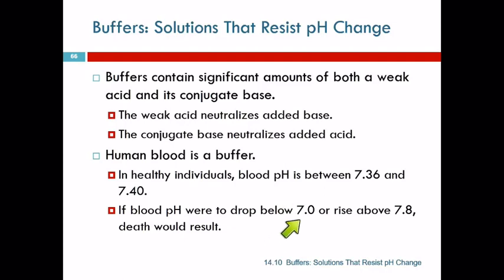It needs to be between 7.36 and 7.40. If your blood pH goes below 7.0 or above 7.8, you die. So it's really important for your blood pH to stay the same, and so it has a buffer system, a weak acid and the conjugate base that allow it to absorb acids or bases without changing pH.